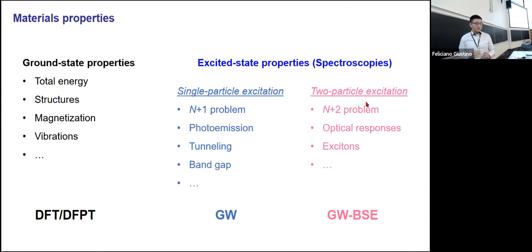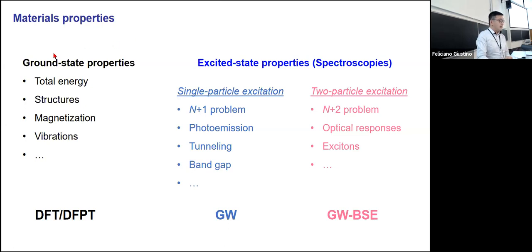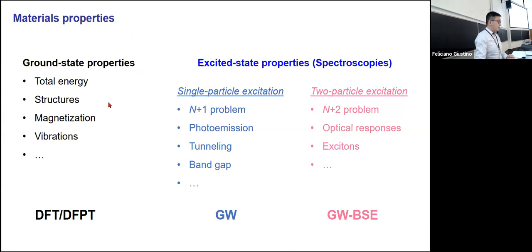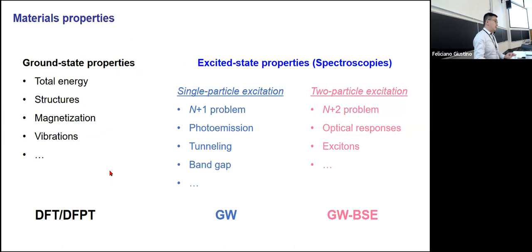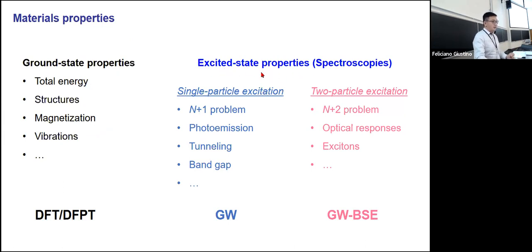When we talk about materials properties—we've seen a lot already this week, especially on electron-phonon coupling—the properties can basically be grouped into ground state properties or excited state properties. For ground state properties, we have total energy, structures, magnetization, and vibrations. These are based on DFT and DFPT, so they are based on ground state theory.